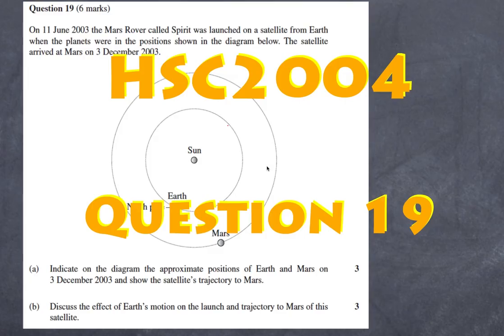Welcome to High School Physics Explained. This is a quick answer to a past question from the HSC 2004 question number 19. This particular one is all about Kepler's third law and also about what we need to do to launch a rocket into space.